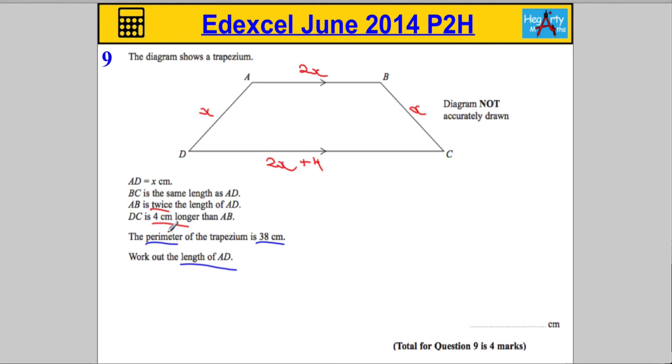Okay, so the perimeter is 38, we've got all the sides, so let's add them up. So if I say that 2X plus X plus 2X plus 4 plus X, that's all of our sides, if I add them all up, the answer must be 38cm.